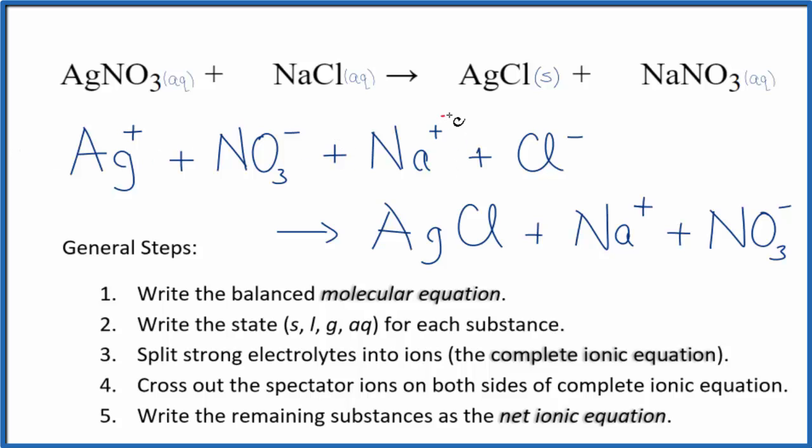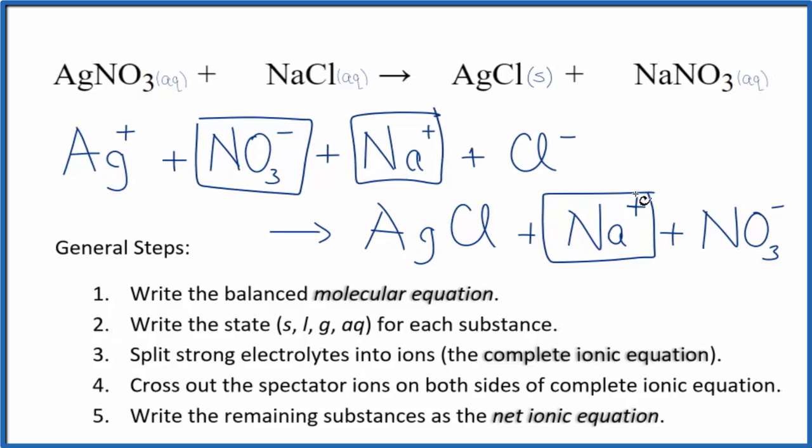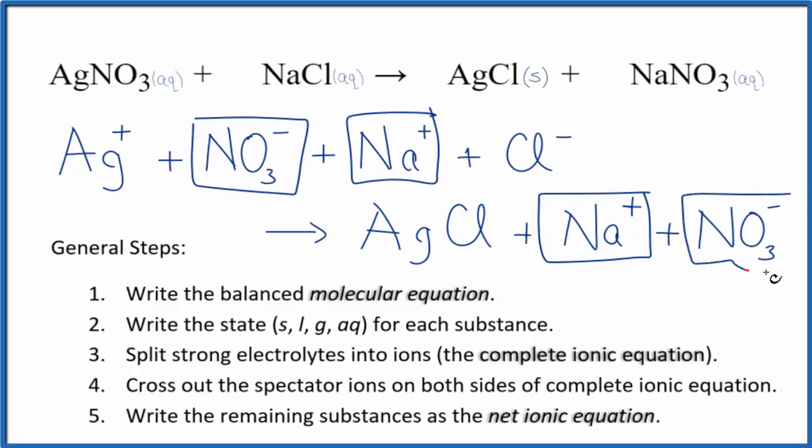So I can see in the reactants, I have sodium here, and then again in the products. That means it's a spectator ion. I can get rid of it. Same with the nitrate. I have the NO3- here, and then I have NO3- here in the products.